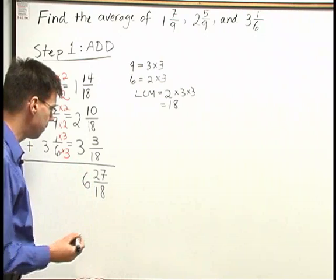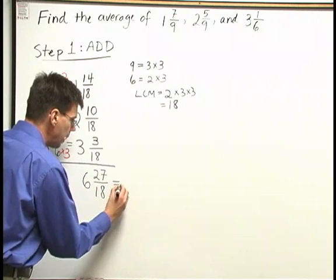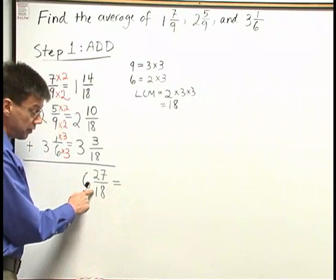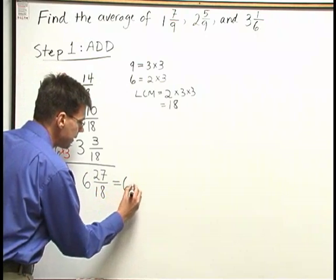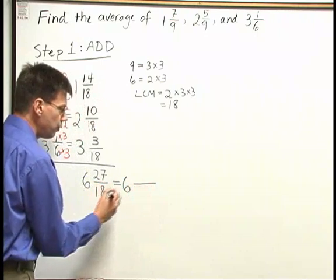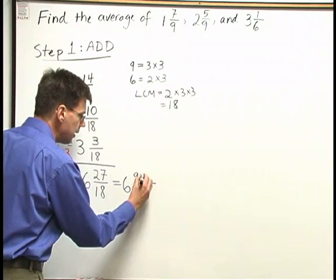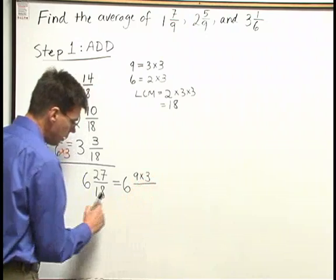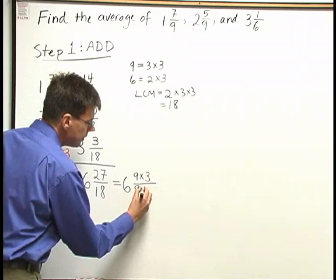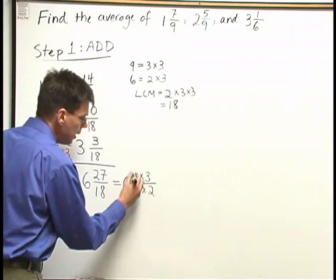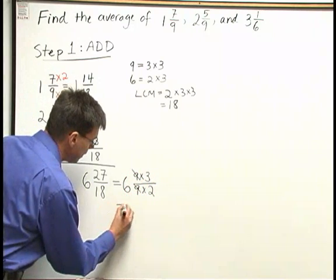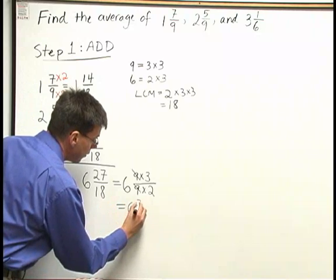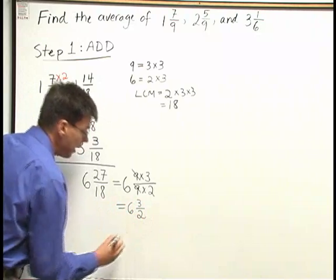Now we need to simplify this sum. I can reduce the fractional part, twenty-seven over eighteen. Let me recopy the six, and twenty-seven I can write as nine times three, over eighteen is nine times two. I can cancel a factor of nine above and below. That gives me six and three halves.